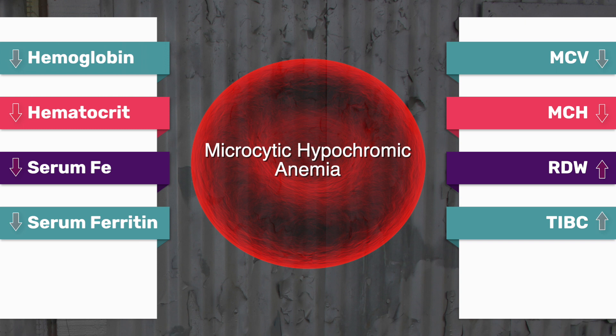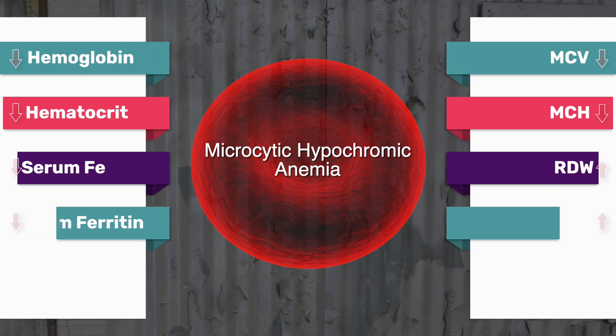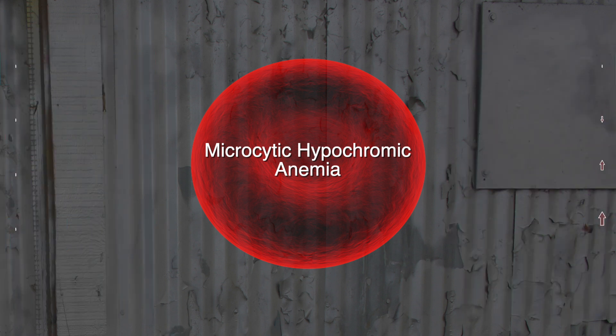Meaning if your iron count is high, your TIBC will be low, and vice versa — if your iron count is low, your TIBC will be high. After reviewing the patient's lab report, you understand this patient has iron deficiency anemia and you want to provide a plan of care to help manage their care.